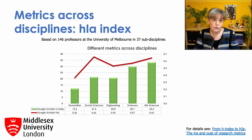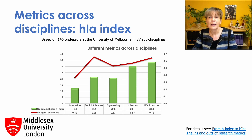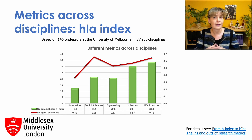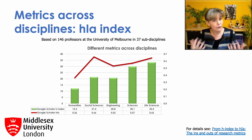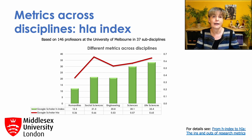So, whilst we should always be careful in comparing metrics across disciplines, if we do compare them, using comprehensive data sources and metrics that correct for different publications and citation practices are essential. If you want to read about this in more detail, just follow the link on this slide.